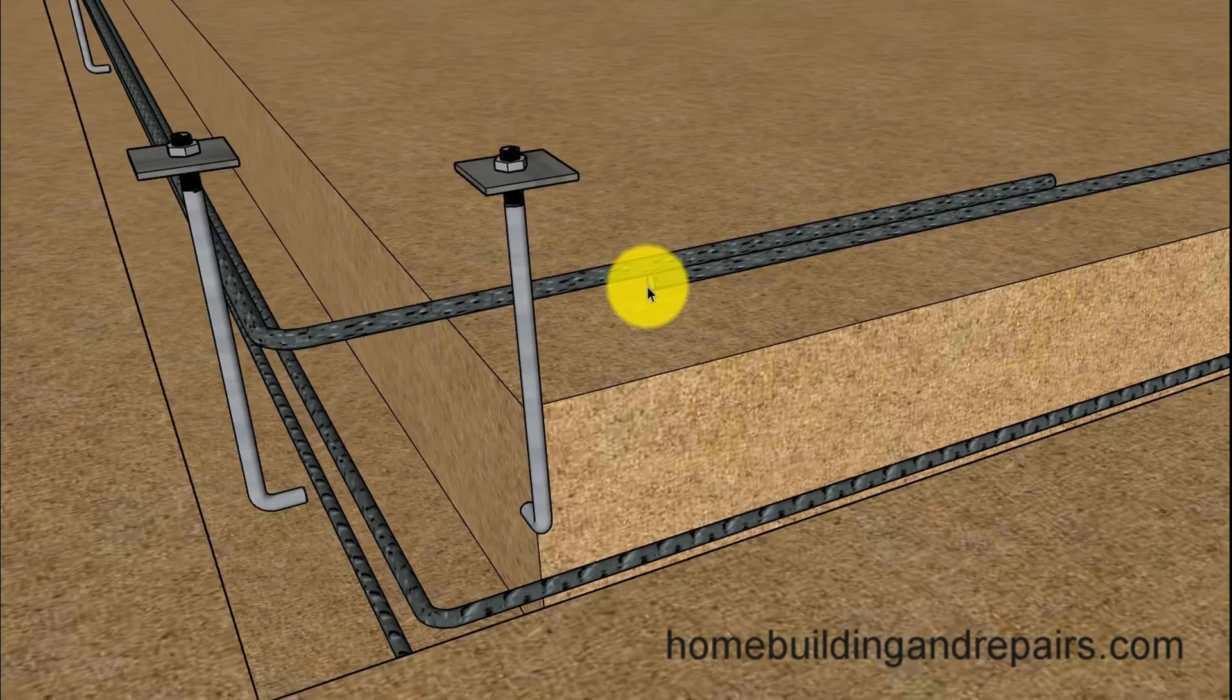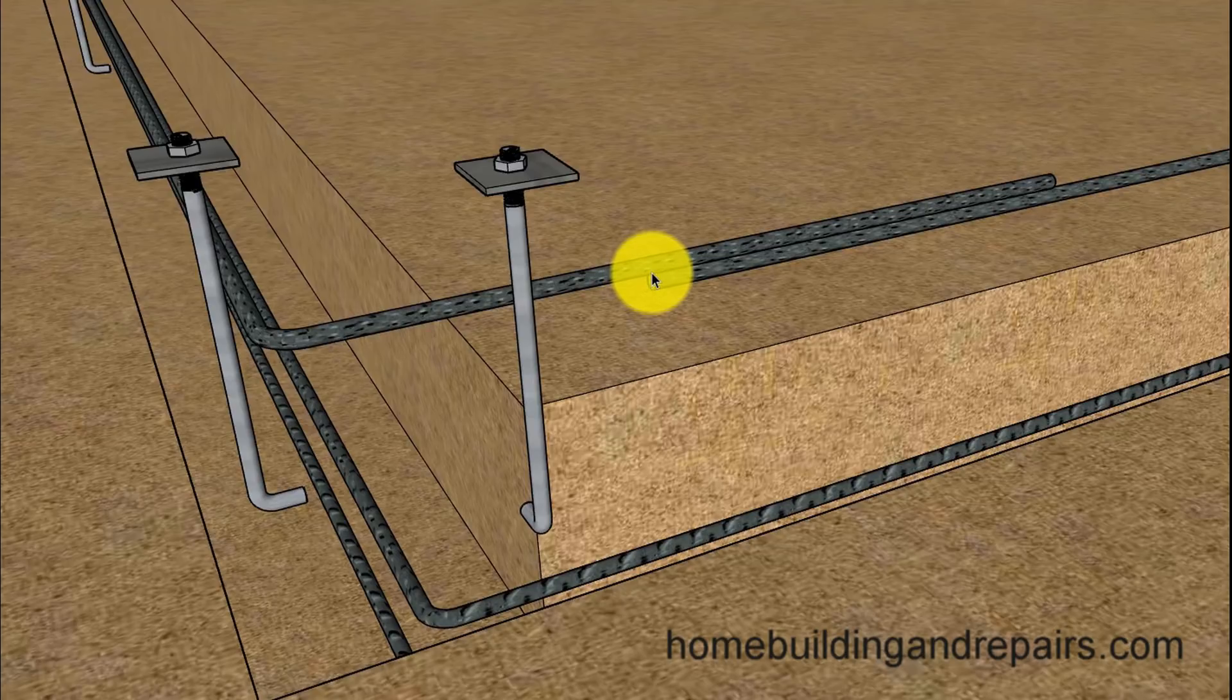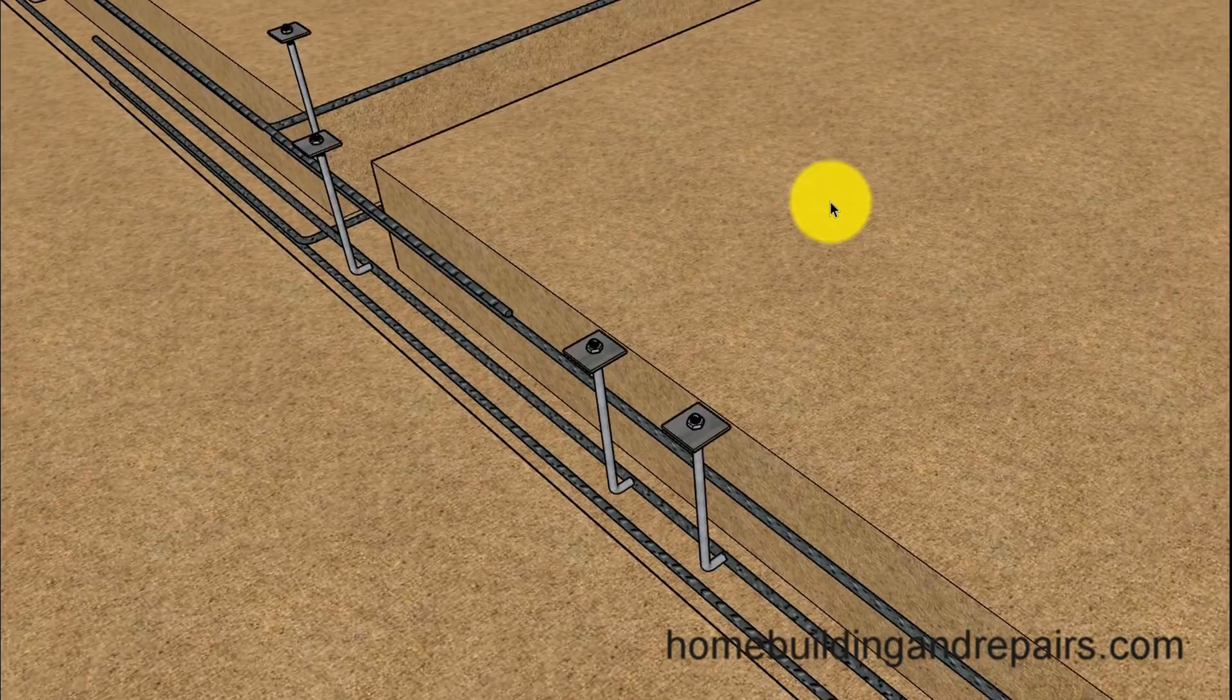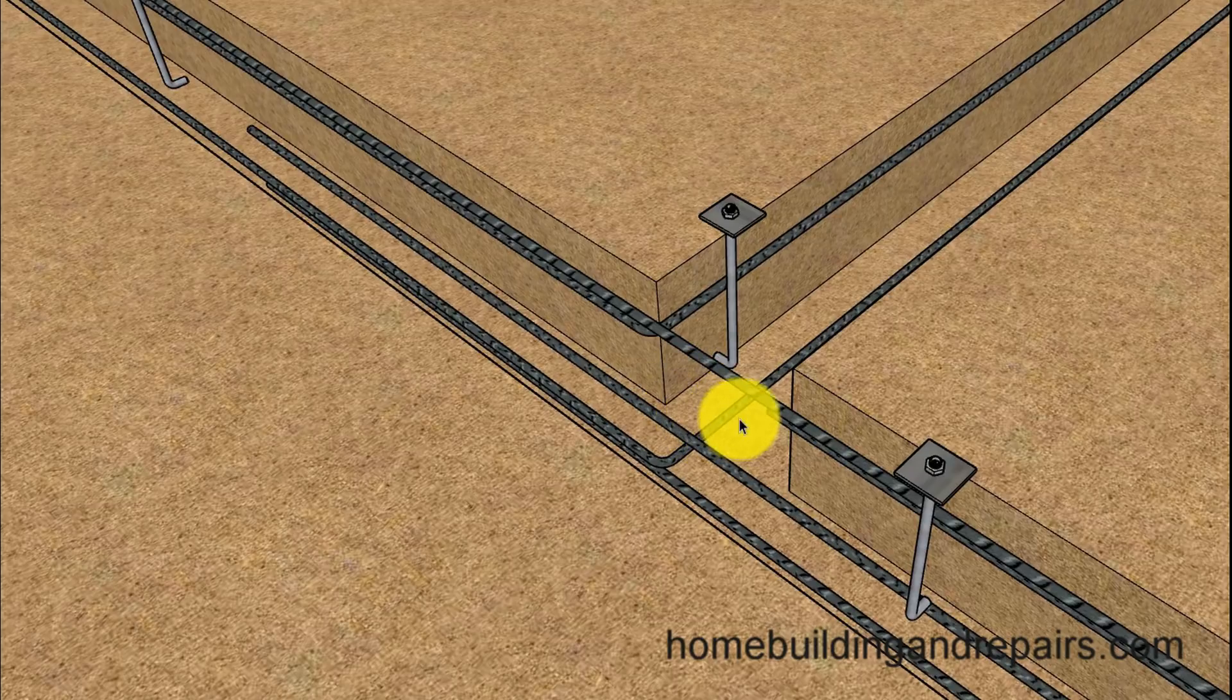If it's half-inch diameter rebar, then the minimum lap would be 20 inches - 40 times the diameter. 20 inches is such a standard thing for me using half-inch rebar.